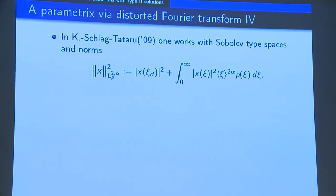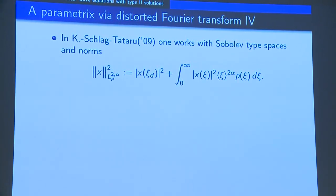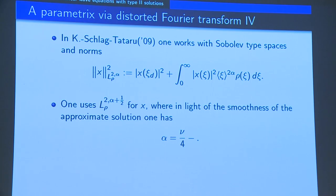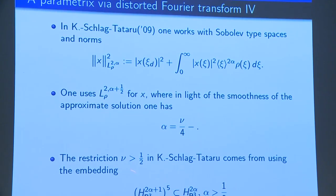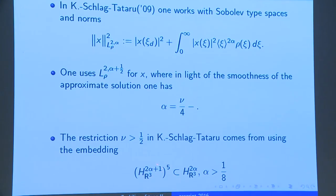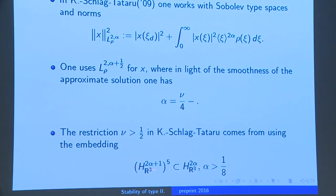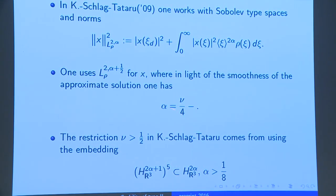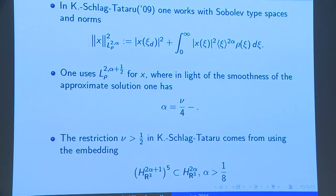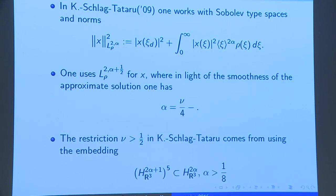In the work with Schlag and Tataru, we introduce crude norms in terms of the Fourier transform and do an iterative scheme. The restriction ν > 1/2 comes from the fact that you need an embedding of this form, which requires α to be large enough — and α can be determined in terms of ν.